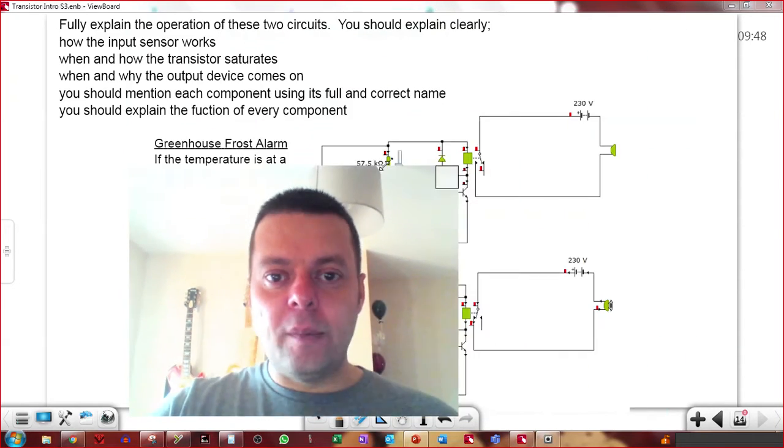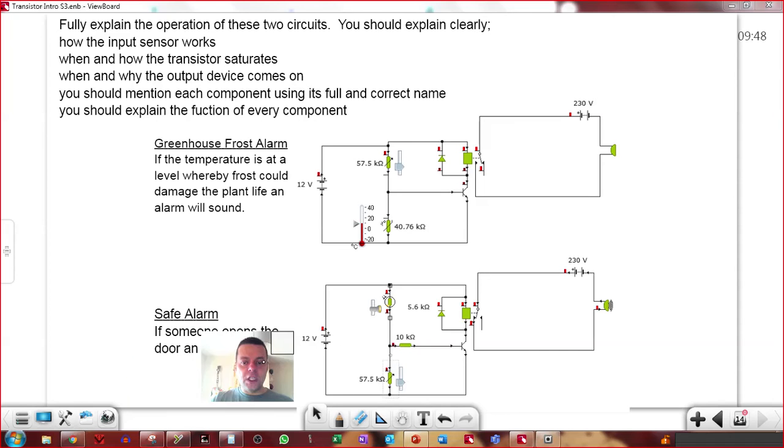Okay, so let's get a look at what I'm asking you to do. We've got these two circuits here, and I'm giving you a description of what the circuit's for, and then the two complete circuits. I'm asking you to fully explain the operation of these two circuits. You should explain clearly, so in your explanation, and this is all text, you know, I'm expecting a sketch of the circuit and then a wall of text.